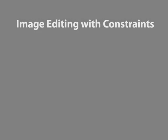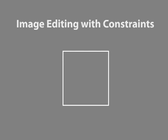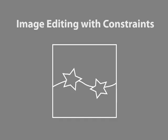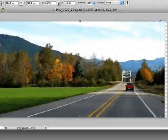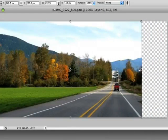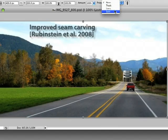Many recent image editing approaches take high-level image constraints as input, for example a change of aspect ratio or in-painting a marked region. Some of these algorithms are interactive, like seam carving, but offer limited control over the results.